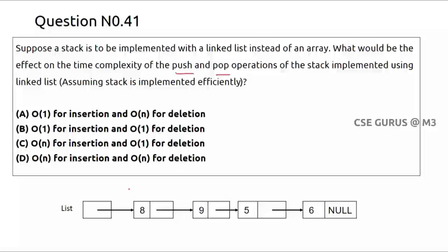For example, if the first element is 6 and you want to insert 5, you insert 5 at the front, making it: 5 → 6. In a stack, it will look like this — initially 6, then after pushing 5 it becomes 5 → 6. When you want to pop, you get 5 first, then 6. Similarly, 9 is inserted, then 8.